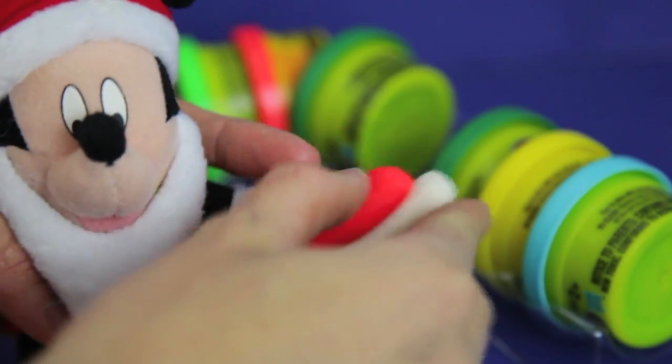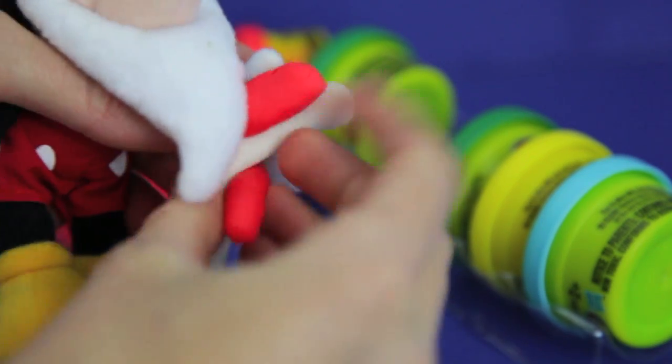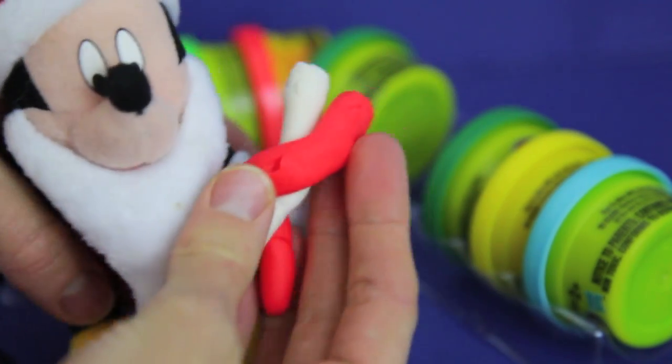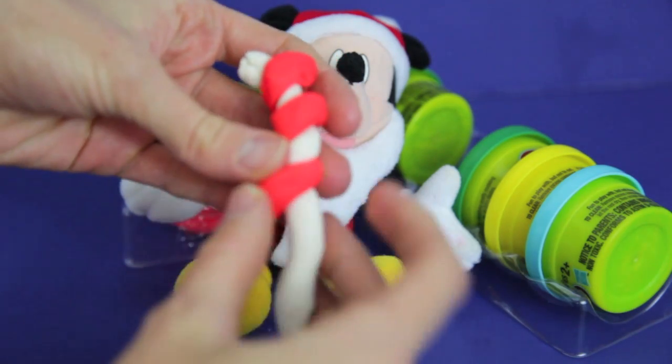I'm now done rolling out the white and red Play-Doh, so now I can twist it together. It is a little difficult to twist, so maybe I should have made each of the white and red Play-Dohs a little bit thinner.